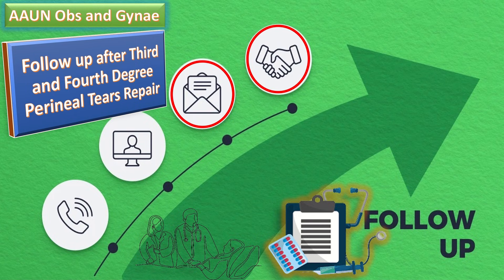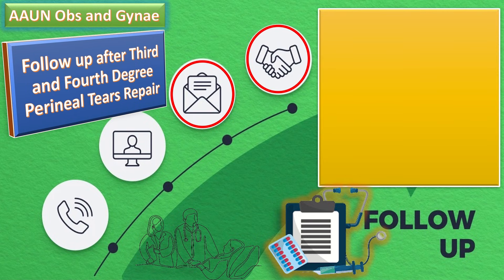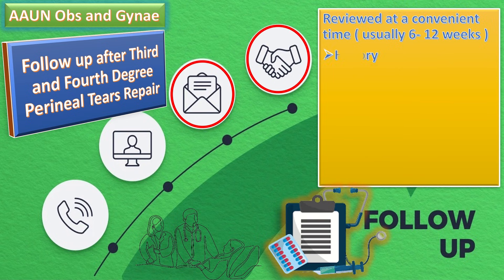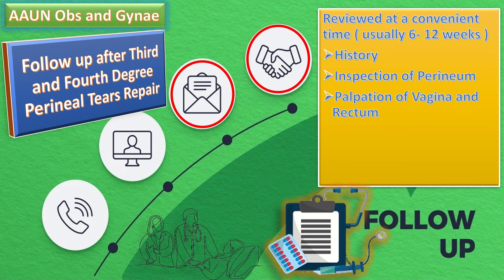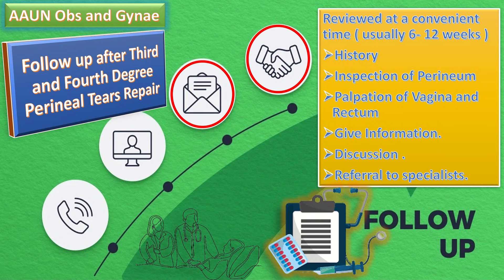Follow-up after third and fourth degree perineal tear repair is very important and includes review of the patient at 6 to 12 weeks, taking appropriate history, inspection of the perineum, palpation of the vagina and rectum, providing appropriate information to the patient, discussing future management, and referral to a specialist for appropriate management thereafter.